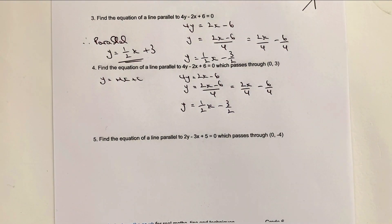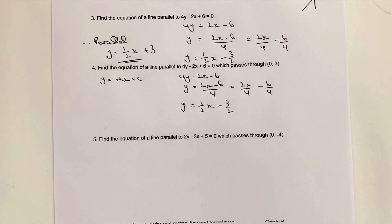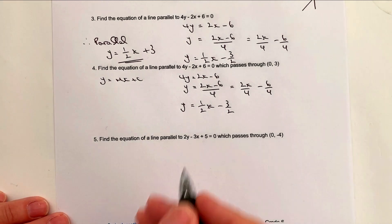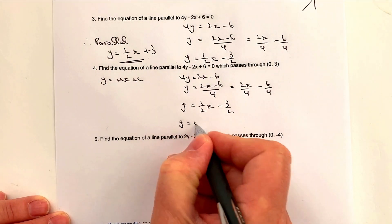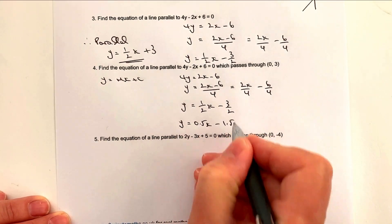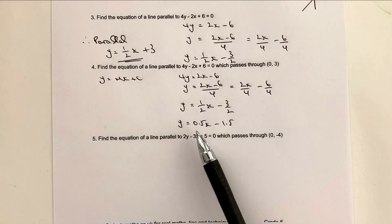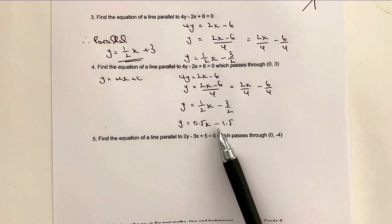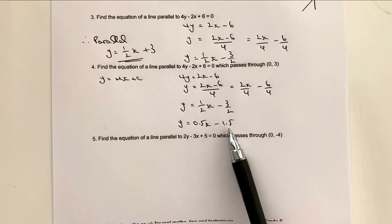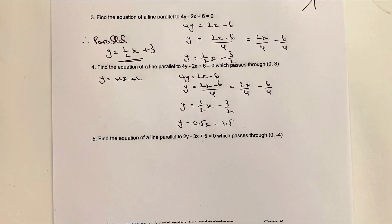For clarity, let me also convert this to a decimal. y = 0.5x − 1.5 is exactly the same. Now, what this particular line says is it passes through the point (0, −1.5) — this is actually the y-intercept.